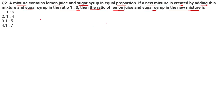Before we get into this question, I need you to understand a few things. This question is based on mixing a pure component into an impure component. Here we have an impure component — a mixture of lemon and sugar — into which we're mixing a pure component, that is sugar. Whenever we have this kind of question, we need to understand a formula: quantity is always equal to concentration times volume.